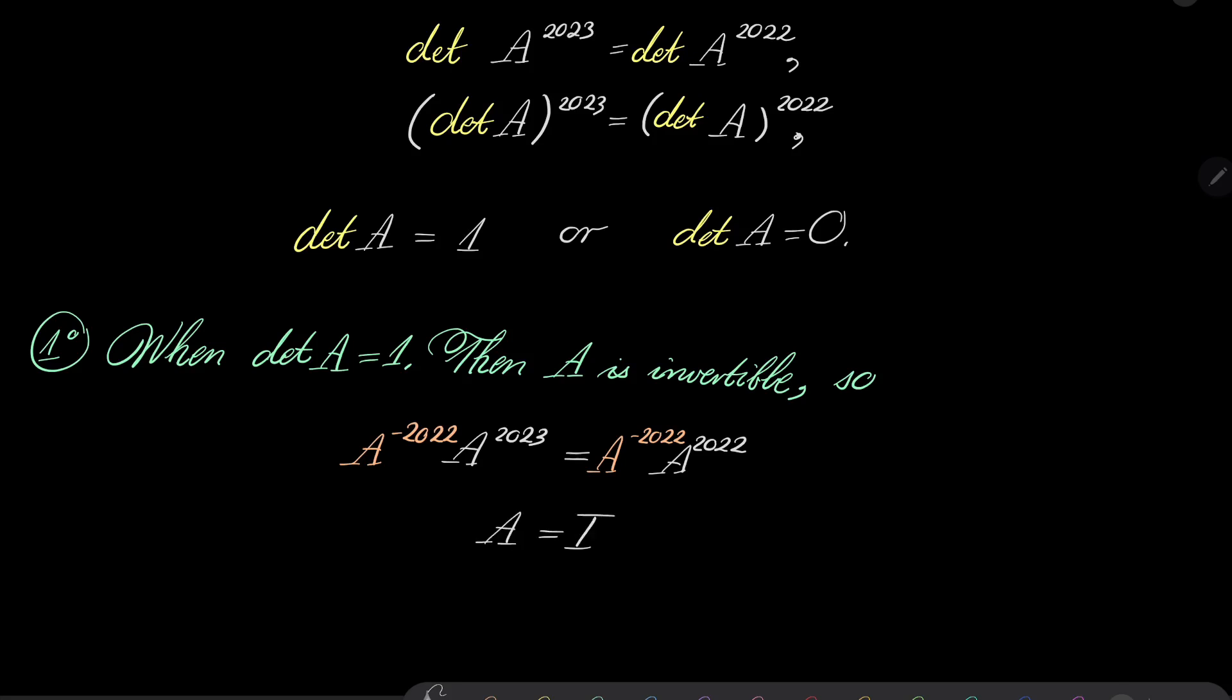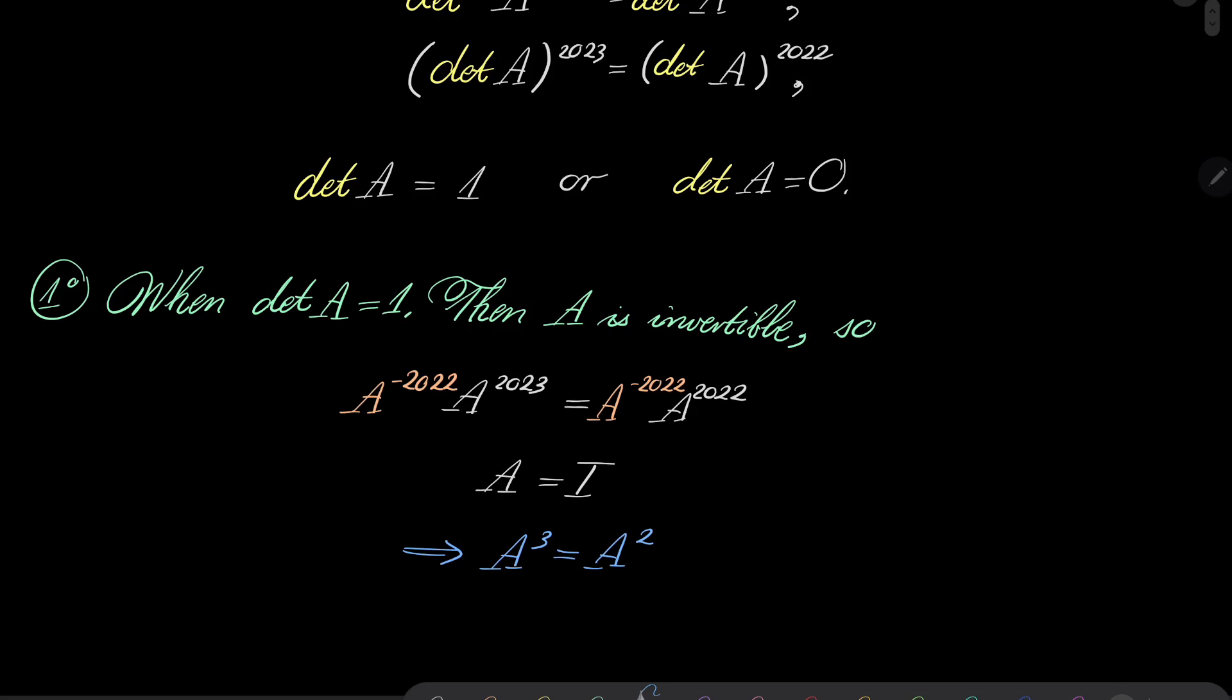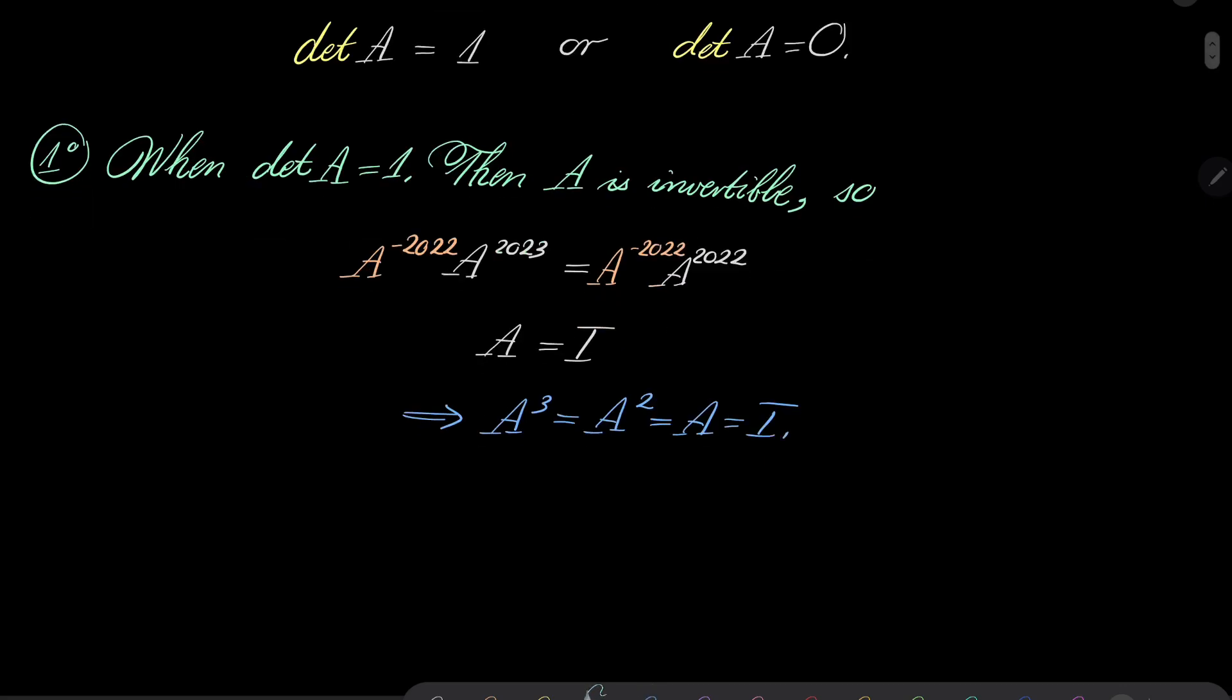And now we get what exactly, we get that the identity matrix equals, sorry, A equals the identity matrix. And since this is the case, well of course, then A cubed and A squared are equal because they are also the identity matrices. All right, so this is rather simple.